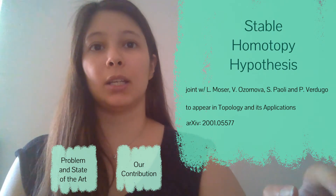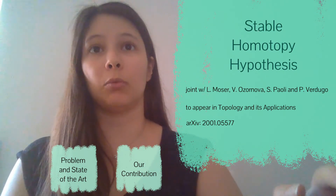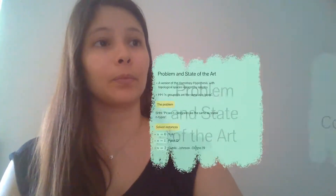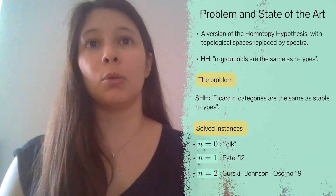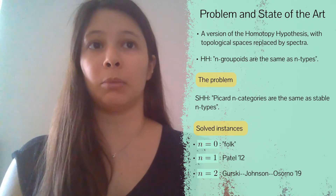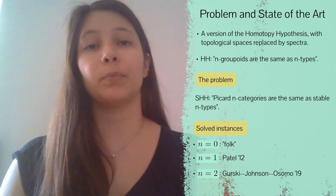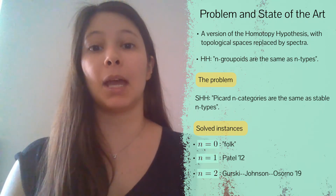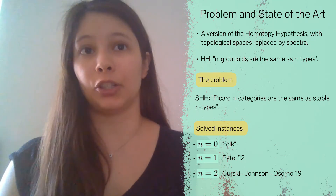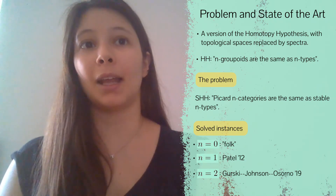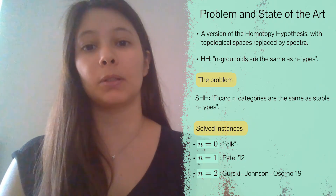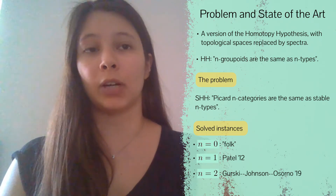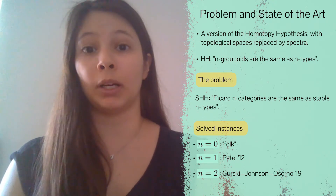My next project is on the stable homotopy hypothesis, and this is joint work with Lynn Moser, Victoria Osornova, Simona Pauli, and Paolo Verdugo. The stable homotopy hypothesis is a version of the homotopy hypothesis where spaces are replaced with spectra. The homotopy hypothesis tells us that n-groupoids are the same as n-types, and then the stable version tells us that Picard n-categories are the same as stable n-types. Some instances of this statement were present in the literature already for the cases n equals 0, 1, and 2.